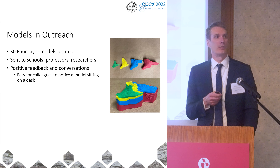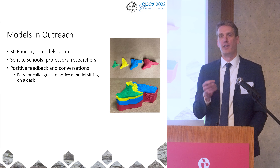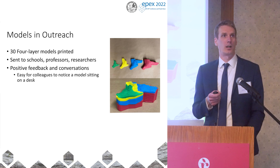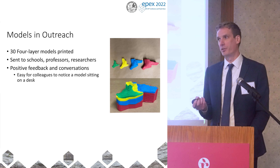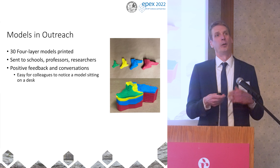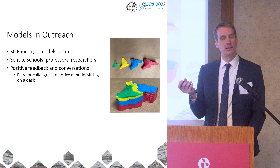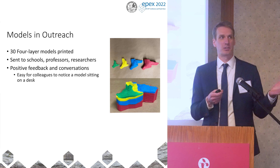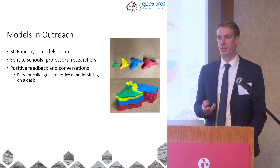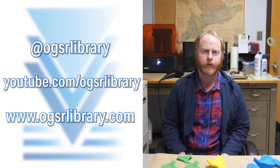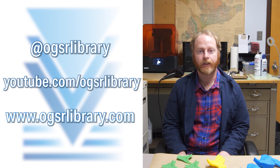So what have we been doing with these models? We've printed about 30 of the four-layer models to date and sent them to schools, professors, and researchers. They've been used in public and community outreach, and we've gotten quite positive feedback because they're easy for anyone to understand — different age groups can grasp the shapes easily. It's a good conversation starter because it's always available on people's desks, and people ask about it just because it's sitting there rather than hidden on a computer. To keep track of this project, you can follow us on social media, check out our YouTube channel, visit our webpage at www.ogsrlibrary.com, and sign up for our newsletter.